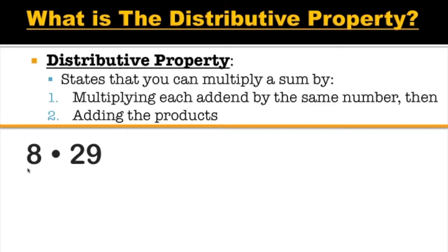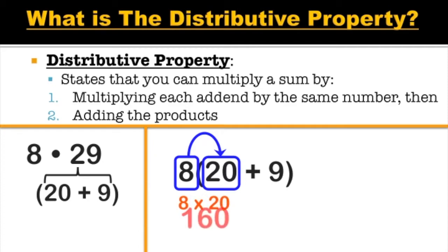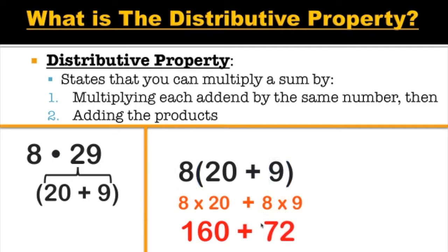Here's another example: eight times twenty-nine. How could we break down one of these numbers to make it easier to multiply? Eight is already a one-digit number, but twenty-nine is a two-digit number, so we break it down into twenty plus nine. We distribute eight to twenty, giving us eight times twenty, which is one hundred sixty. We bring down our plus signs, then distribute eight to nine, giving us eight times nine, which is seventy-two. Now we add the products: one hundred sixty plus seventy-two gives us two hundred thirty-two.